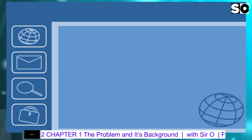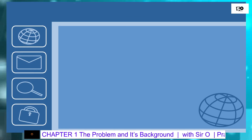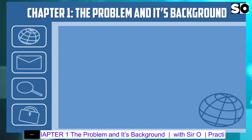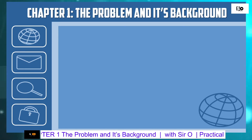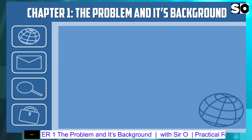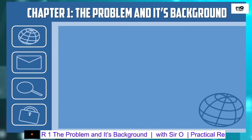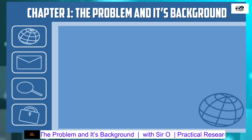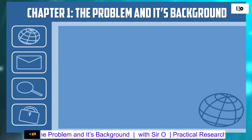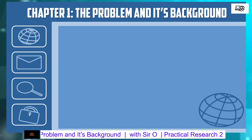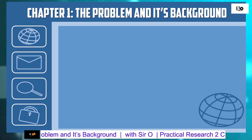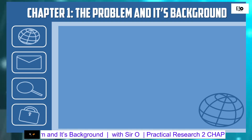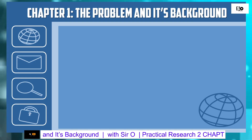The first chapter of the research paper is entitled The Problem and Its Background. Its purpose is to introduce the problem and clarify important variables, its delimitations and its significance to the field of study.